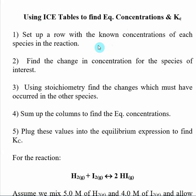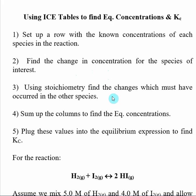You typically start out an ICE table with a row of all the concentrations that you know — this is the Initial row, and they are not going to be at equilibrium. Then you use the equilibrium concentration given for at least one species to find the change from initial to equilibrium for that species. Using stoichiometry, you find the changes for all other species, and from that you can find the equilibrium concentrations for all species. Once you have those, you plug them into the equilibrium expression and calculate Kc.